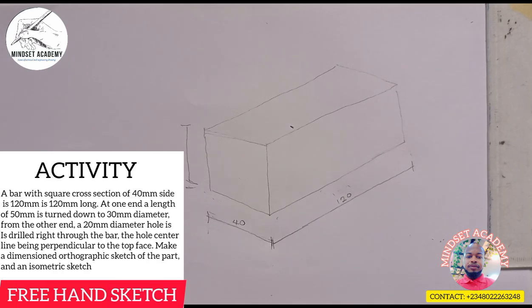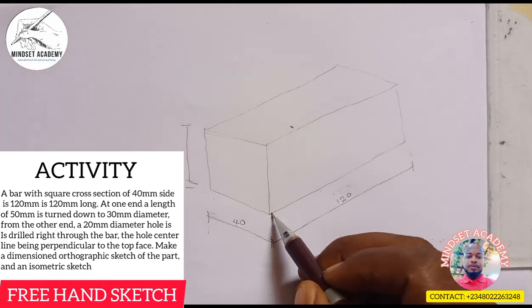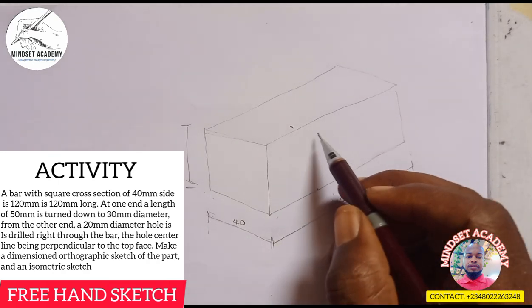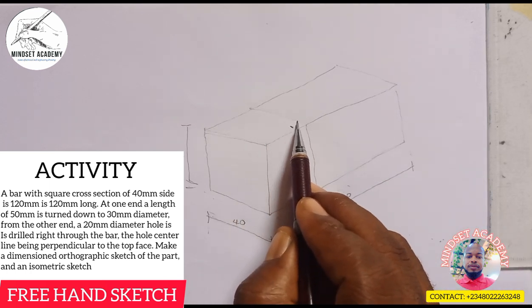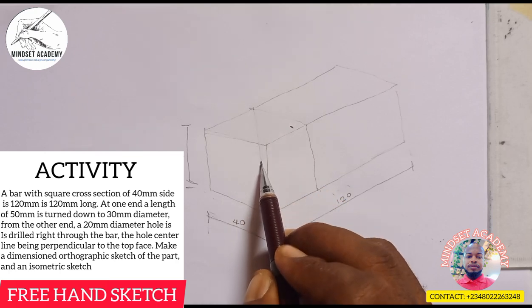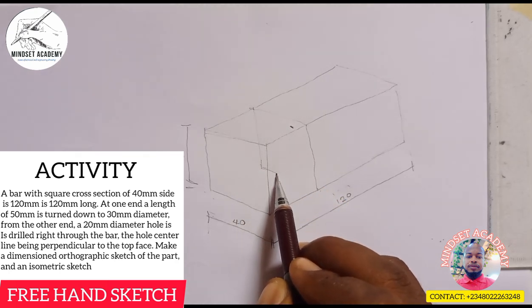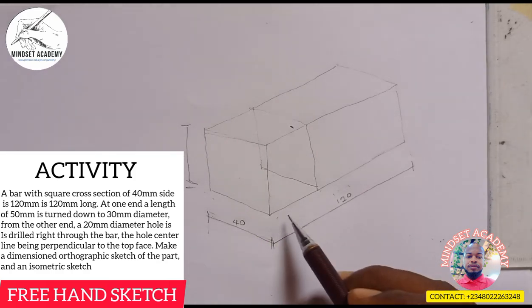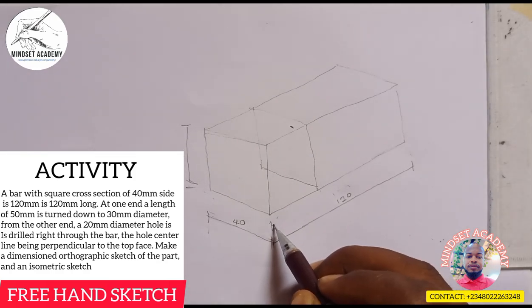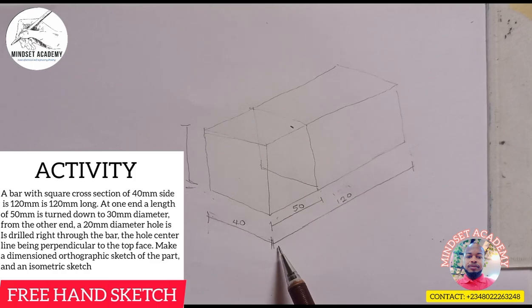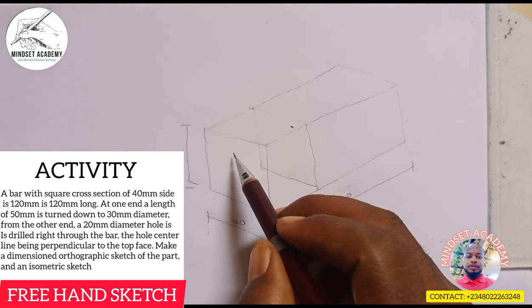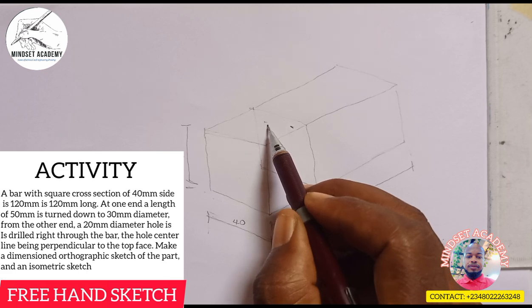The question now says that from one end, 50 millimeter is turned down to 30 millimeter diameter. So from the other end here, this is 50. So from here to here, it's 50 millimeter. It is now turned down to 30 millimeter, so it was reduced from this point.